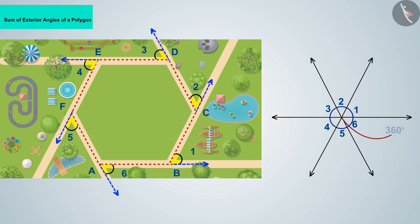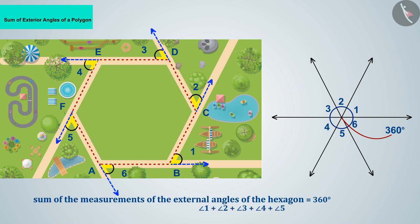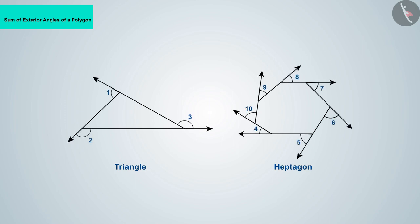Using this we can say that the sum of the measurements of the external angles of the hexagon is 360 degrees. Let us now discuss the external angles of these figures.